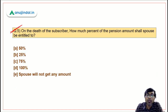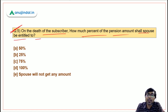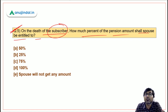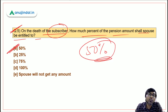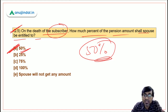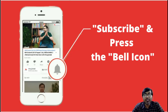Question 5: On the death of the subscriber, what percentage of the pension amount shall the spouse be entitled to receive? As discussed, the spouse shall be entitled to receive 50 percent of the pension amount. Option A — 50 percent — is the correct answer.